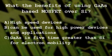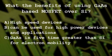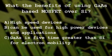What are the benefits of using gallium arsenide-based MOSFET over silicon? First, it's a high-speed device. Second, it can be used for high-power applications. Third, gallium arsenide has five times greater electron mobility than silicon.